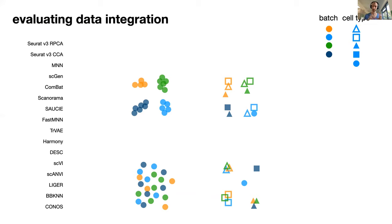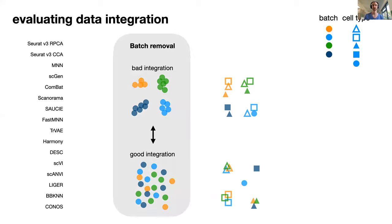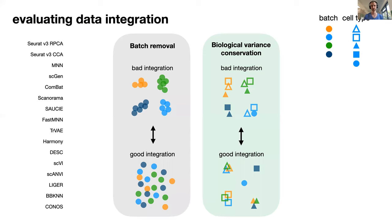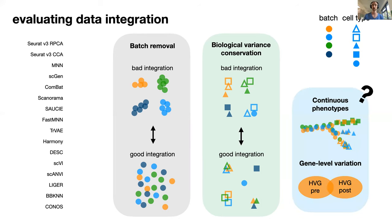These four pictures show two central aspects of data integration, or evaluating data integration: the effect of batch removal and the aspect of conserving biological variation. There's a little bit of a compromise usually, because optimizing for batch removal means mapping every cell to a single dot, and there is no more biological variation in that representation. There are of course other aspects beyond these two, such as looking at continuous phenotypes and gene level variation.